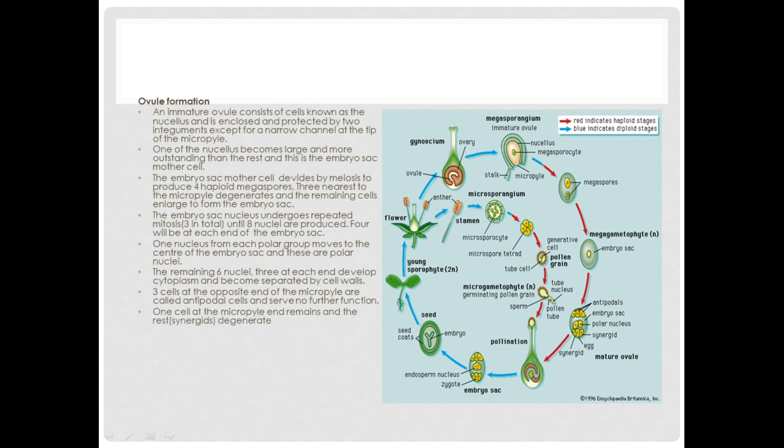One cell at the micropyle end remains and the rest, which are called synergids, they degenerate. Two of them degenerate, which are called the synergids, and the remaining one is called the egg cell.